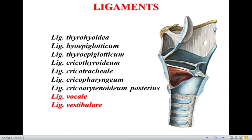Ligaments of the larynx are skeletal and proper ligaments. Skeletal ligaments are: thyrohyoid, hyoepiglottic, thyroepiglottic, cricothyroid, cricotracheal, cricopharyngeal, and cricoarytenoid posterior. These ligaments connect the larynx with the neighboring allocated structures. The proper ligaments of the larynx are the ligamentum vocale and ligamentum vestibulare, which perform the main functions for sound production.